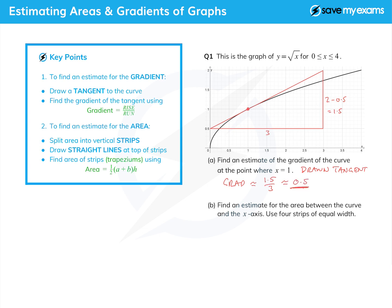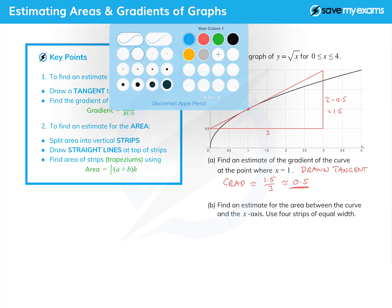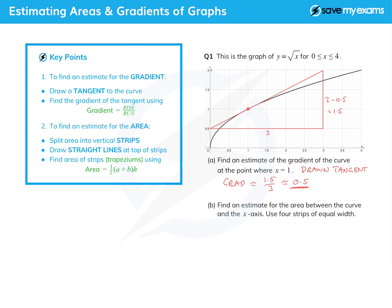Now I'm just going to switch color so I can draw on the graph without confusing you with the red bits. We're going to find an estimate for the area between the curve and the x-axis, so that is this whole area here. How do we do that? Well we split that area into four strips of equal width.